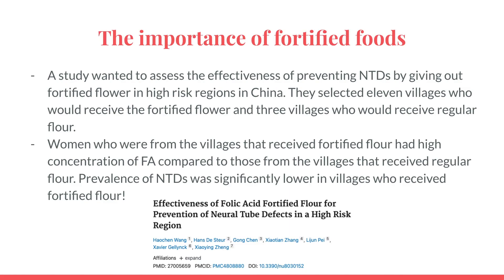Finally, another study wanted to assess the effectiveness of preventing neural tube defects by giving out fortified flour in high-risk regions in China. They selected 11 villages who would receive the fortified flour and 3 villages who would receive regular flour. Women from villages that received fortified flour had higher concentrations of folic acid compared to those from villages that received regular flour. Prevalence of neural tube defects was significantly lower in villages who received fortified flour.